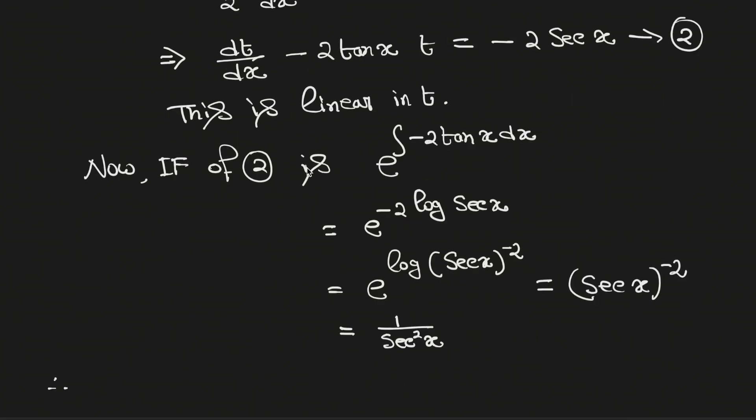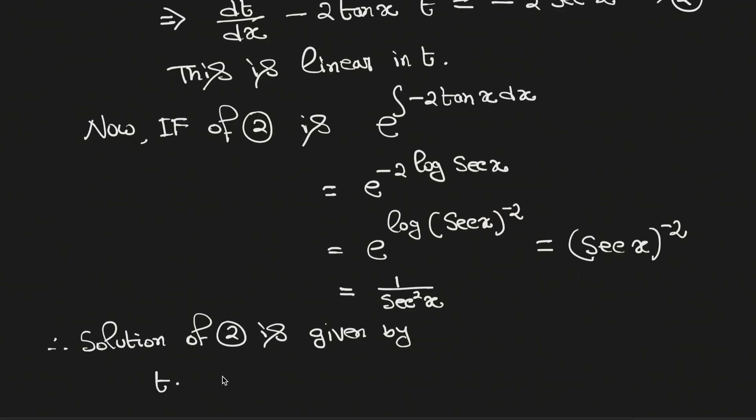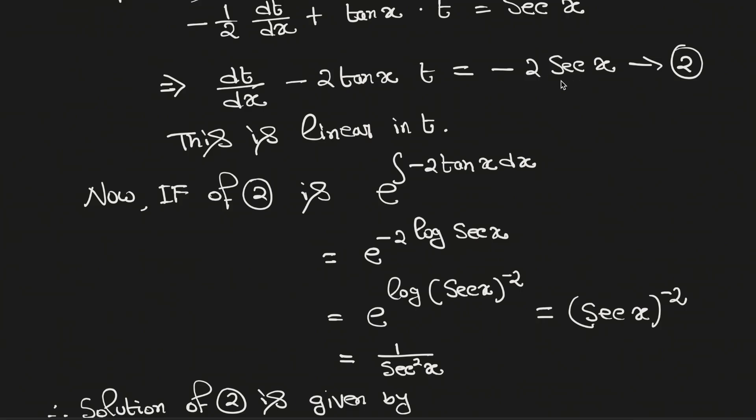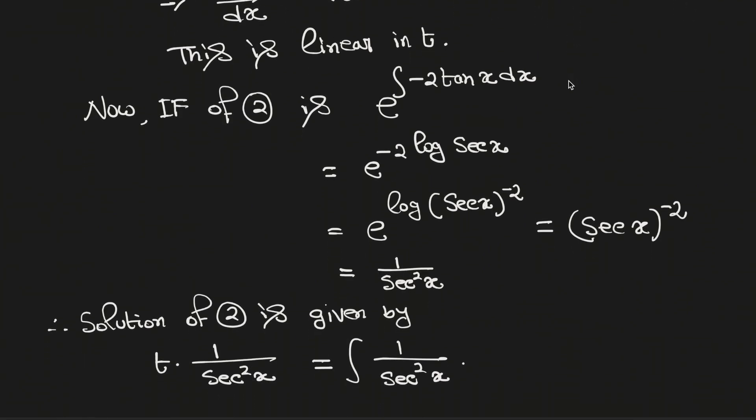Therefore the solution of equation 2 is given by t times integrating factor which is 1 over sec square x equals integration of 1 over sec square x times the function in the right hand side which is negative 2 sec x plus integration constant c.